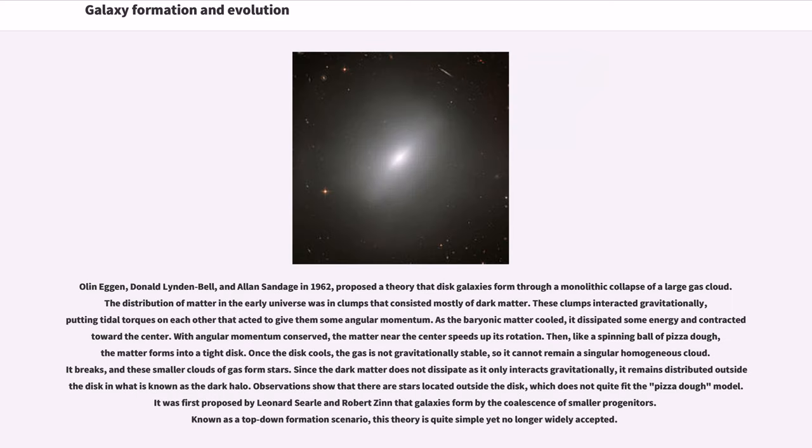Olin Eggen, Donald Lynden-Bell, and Allan Sandage in 1962 proposed a theory that disk galaxies formed through a monolithic collapse of a large gas cloud. The distribution of matter in the early universe was in clumps that consisted mostly of dark matter. These clumps interacted gravitationally, putting tidal torques on each other that acted to give them some angular momentum. As the baryonic matter cooled, it dissipated some energy and contracted toward the center. With angular momentum conserved, the matter near the center speeds up its rotation. Then, like a spinning ball of pizza dough, the matter forms into a tight disk.